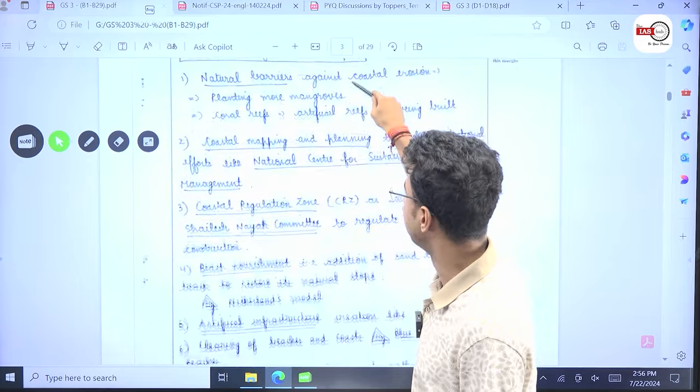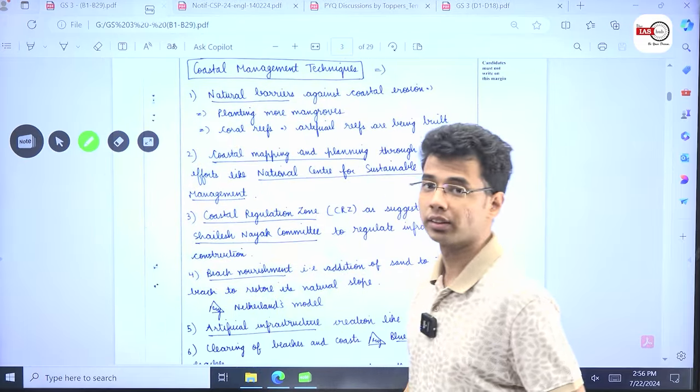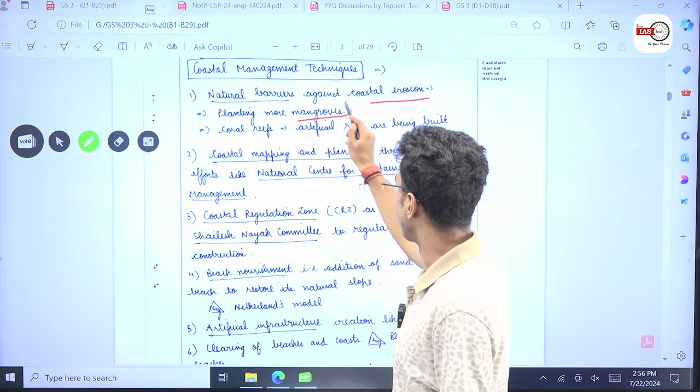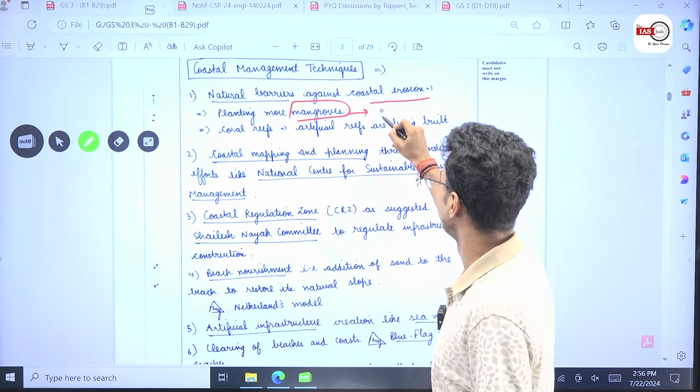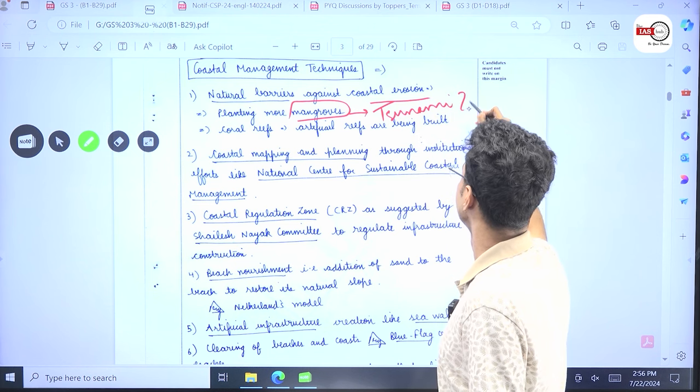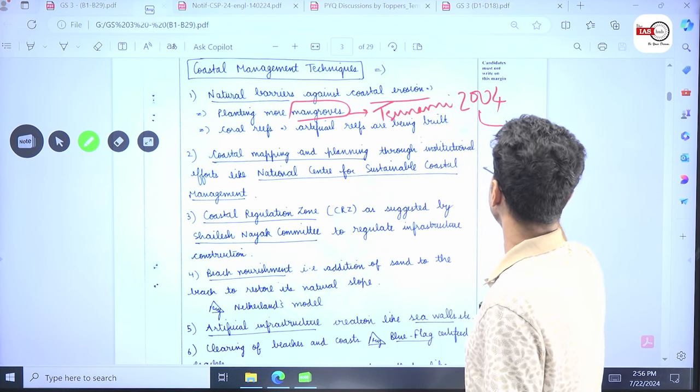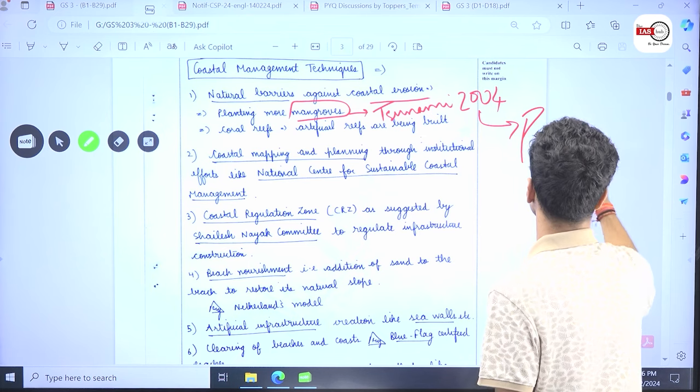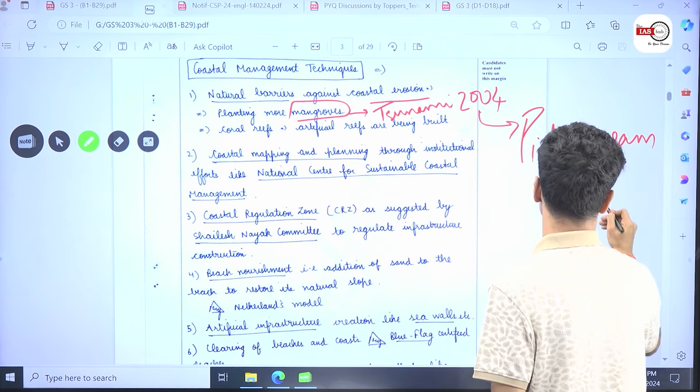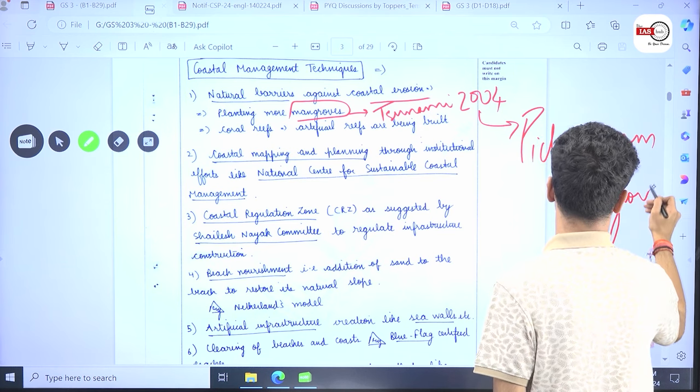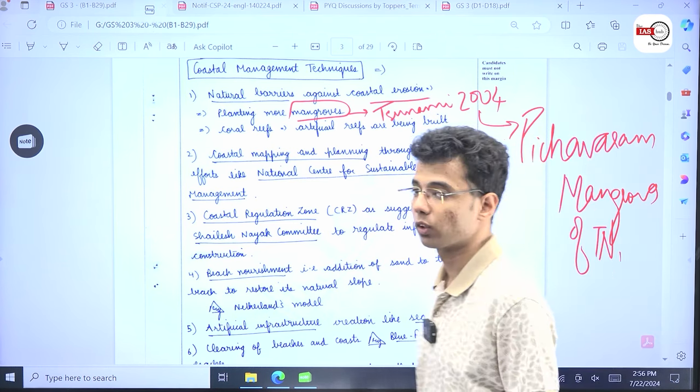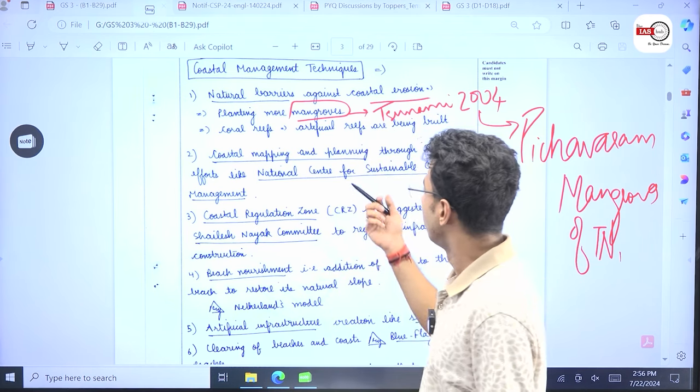Then, coastal management techniques. Natural barriers can be created against coastal erosion. It can be planting more mangroves. If you refer to the tsunami of 2004. The Pichavaram mangroves of Tamil Nadu. They prove to be quite strong barriers against the strong tsunami waves. Then, coral reefs could be one.